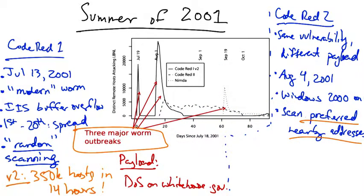Its scan actually preferred nearby addresses. It would choose addresses from the same slash eight with probability one half, from the same slash 16 with probability three eighths, and randomly from the entire internet with the remaining one eighth probability.